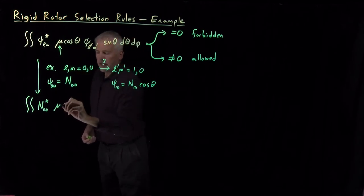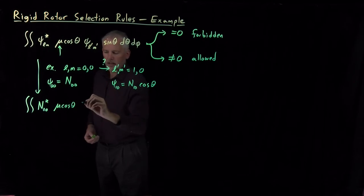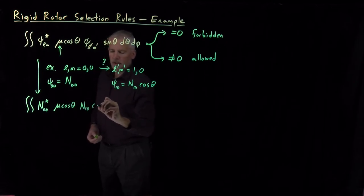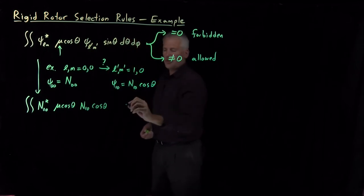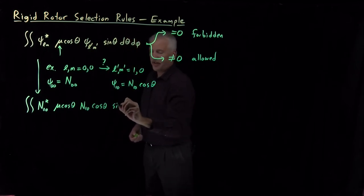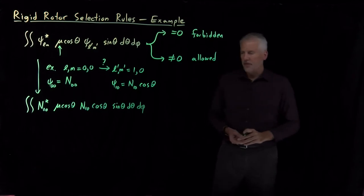The destination wave function, the one-zero state, in our case is N-one-zero times cosine theta. And then for our integration variables, we have d theta d phi, not forgetting that in polar coordinates we need sine theta d theta d phi. All right, so that's the integral we have to do.